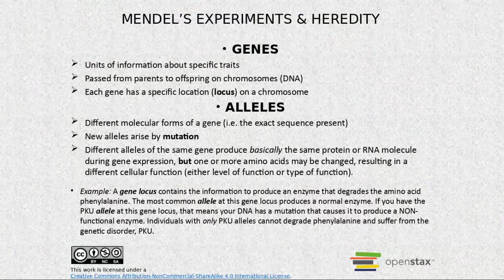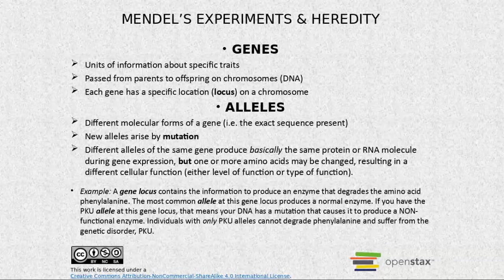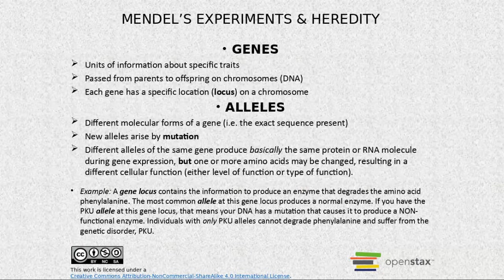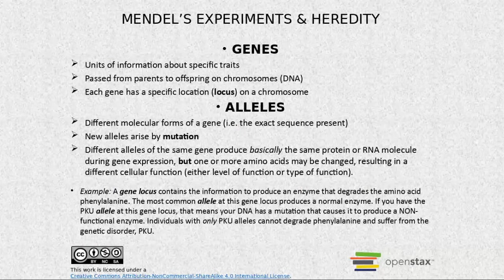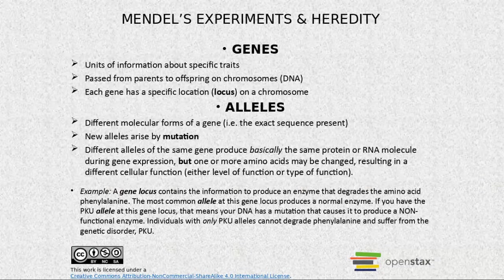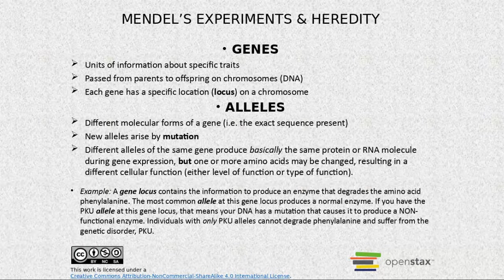Alleles are different molecular forms of genes with exact sequence. A new allele arises by mutations. Different alleles of the same gene produce basically the same protein through an mRNA messenger via what we call gene expression — this is where the gene gets expressed into protein.